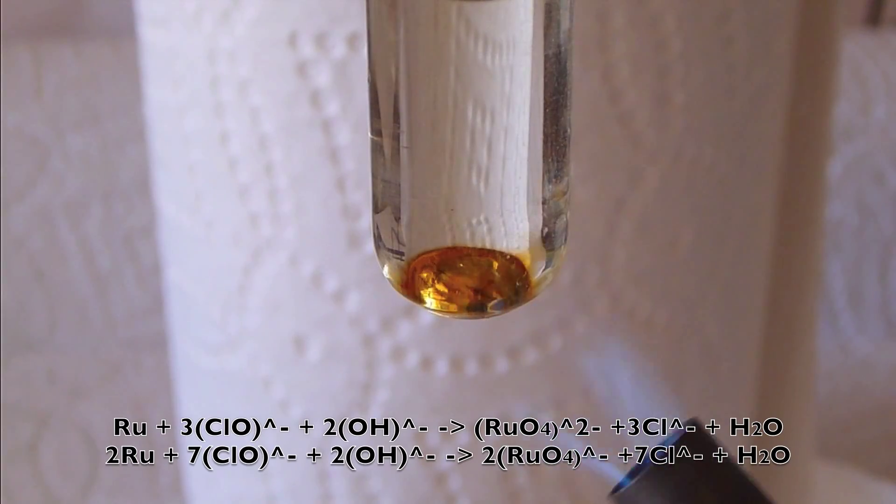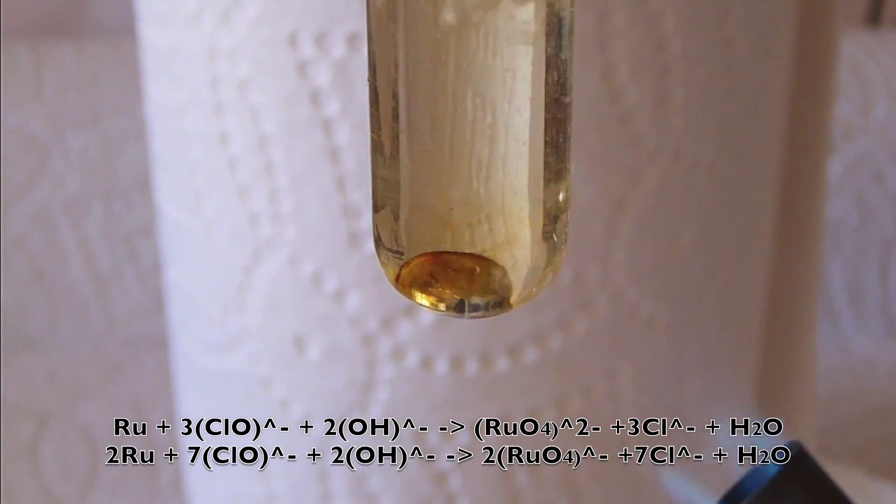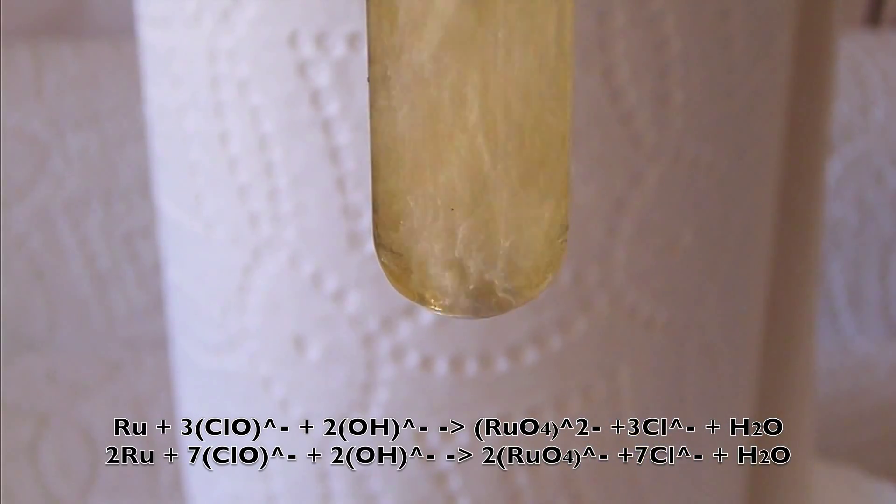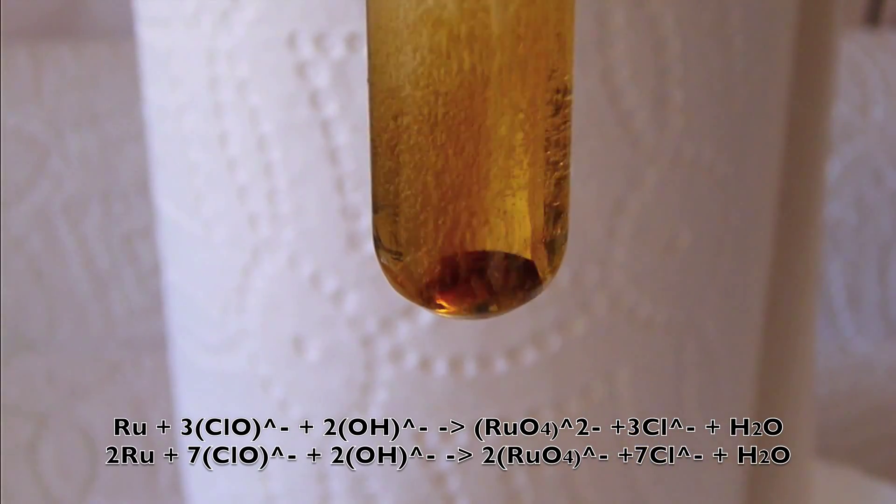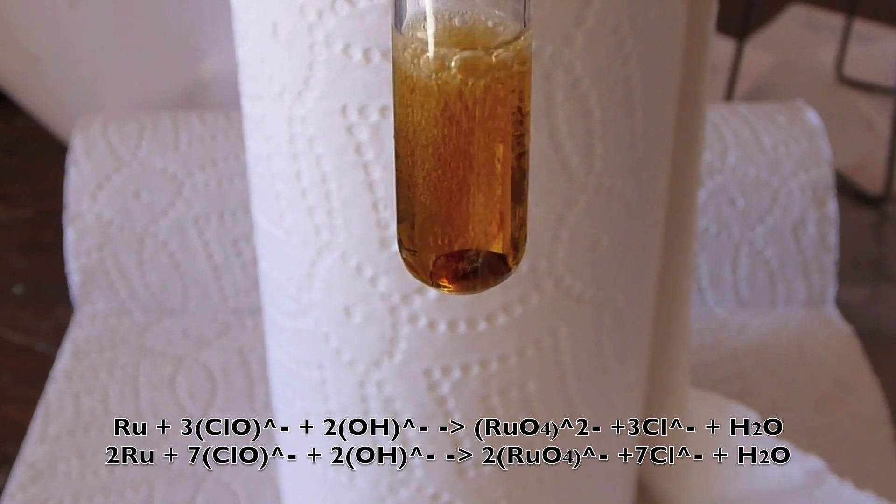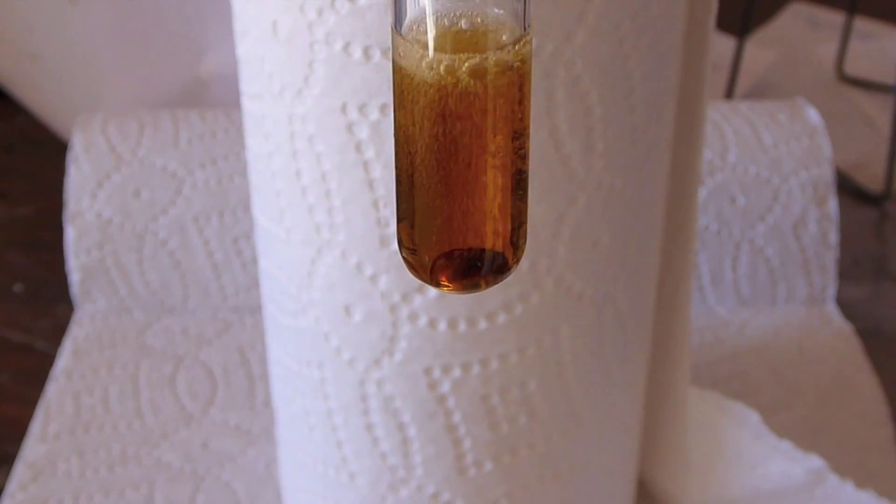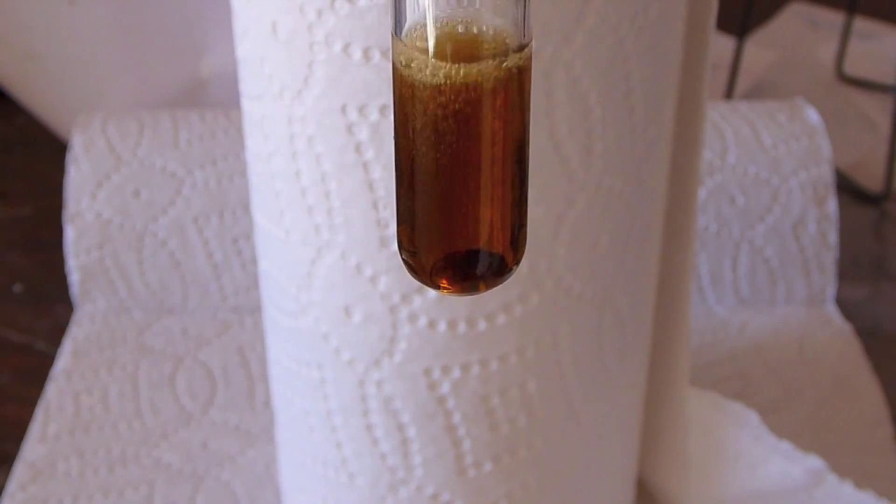As the ruthenium continues to react, you see the solution gets quite a bit darker. It ends up kind of a muddy brown color. This is a mixture of the dirty green perruthenate and the bright orange red ruthenate. To get pure ruthenate, I remove the ruthenium from the solution, and I haven't done that yet, and I let the solution sit out for a few hours.